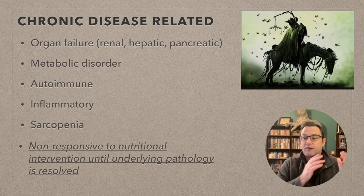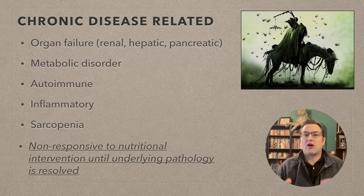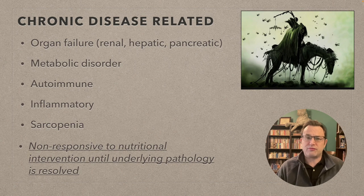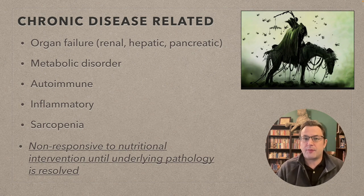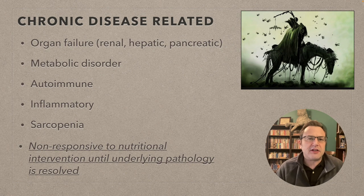Moving to chronic disease-related malnutrition — now there is some inflammation. This is a malnourished state caused by an underlying long-term disease: organ failure, metabolic disorder, autoimmune disorder, inflammatory disorder, or sarcopenia. It's important to note that you do need to meet the nutritional needs, but you won't see much beneficial forward motion until the underlying pathology is resolved.